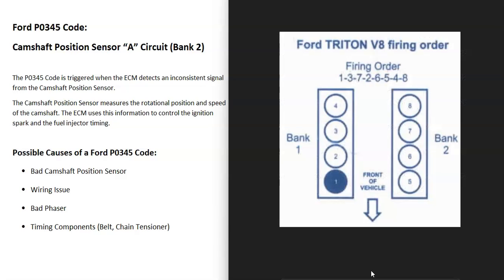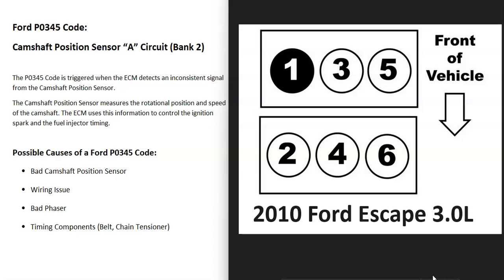If you have a V6 or V8 engine, you're going to have two banks. Bank 1 is always going to be the side of the engine with the number one cylinder. So if you find the number one cylinder, that's bank 1, and the opposite of that is bank 2. So on a V6 or V8, you find bank 2 and the camshaft sensor on that side is going to be the one having the problem.